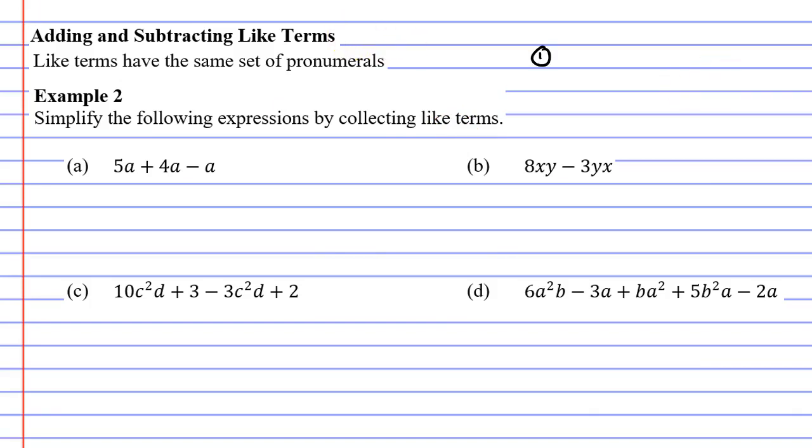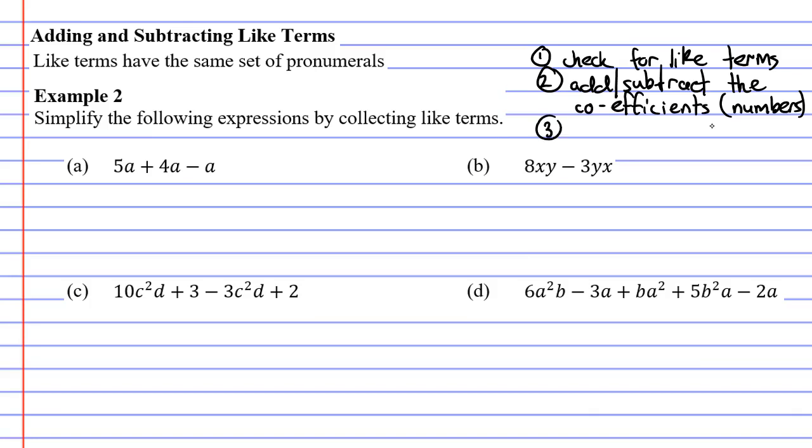The first thing we do is check for like terms. The second step is to add or subtract the coefficients. Now in case you've forgotten what coefficients are, basically they are the numbers that are in front of the pronumerals. The third step is just to basically write the pronumeral at the end of the number. I'll show you how to do that with example two.